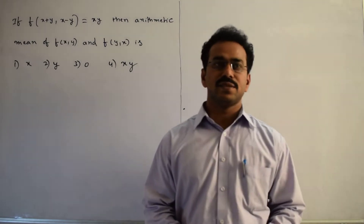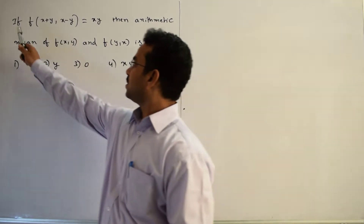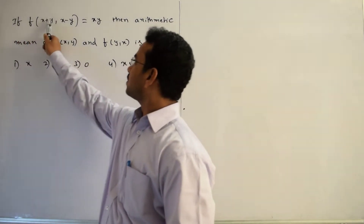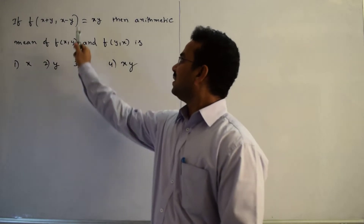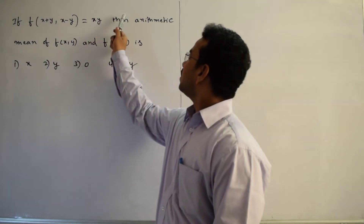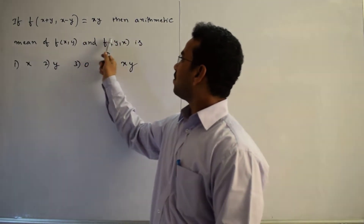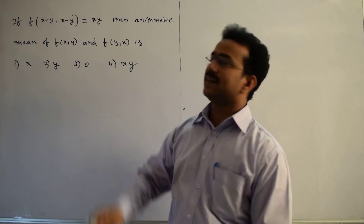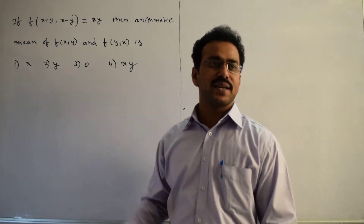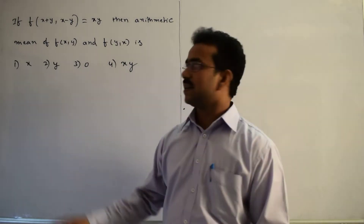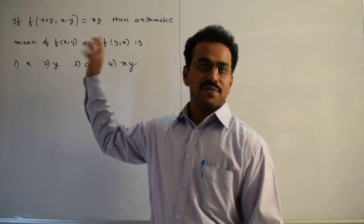Let's discuss the solution of the given question. If f(x+y, x-y) equals xy, find the arithmetic mean of f(x,y) and f(y,x). We need to calculate the arithmetic mean of these two functional values.